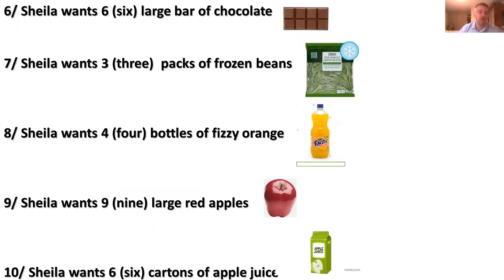Sentence number six: Sheila wants six large bars of chocolate. Do you see the bar of chocolate on the right? Six large bars of chocolate — that's a bit too much! Number seven: Sheila wants three packs of frozen beans. Do you see the pack of frozen beans on the right? That's an example.